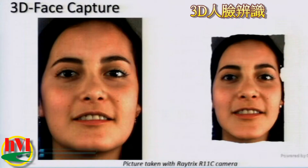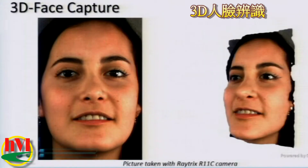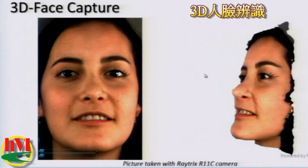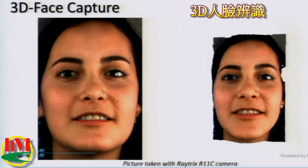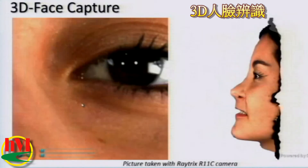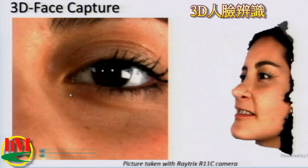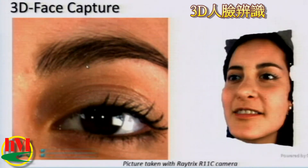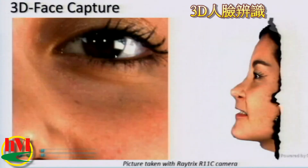Again, the shots, same girl, Andrea. Here on the left, this is the reconstructed image and if I zoom in, you can see it's good detail — you can see fine hairs and everything.